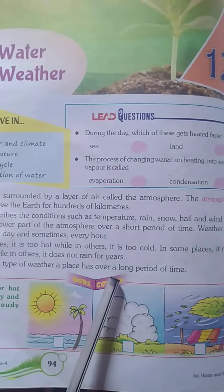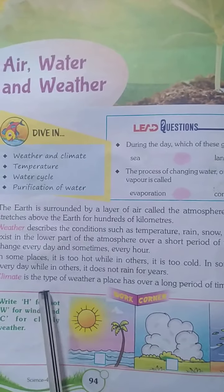Climate is the type of weather a place has over a long period of time.